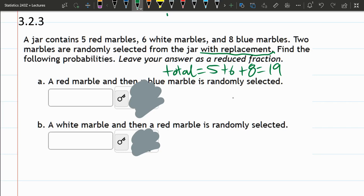Two marbles are randomly selected from the jar with replacement, so it means it's going to reset. We have a red marble and then a blue marble. Probability of red and blue - we get to multiply these probabilities.